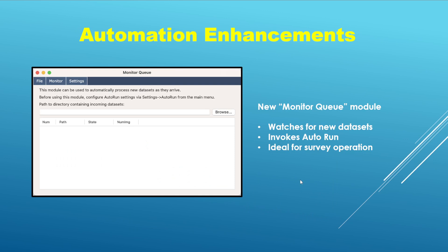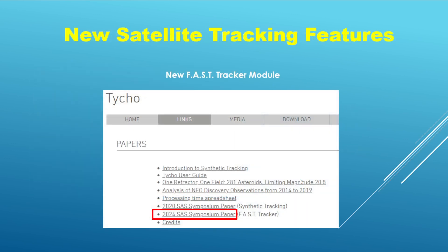A lot of new functionality in version 12 concerns the ability to detect and measure artificial satellites, to include identification and orbit determination. I even wrote an entirely new module to detect moving objects just for this purpose, which I call FAST — an acronym for Fast Acquisition of Streak Targets. The objects themselves do not actually have to be streaked, although it helps a little. I wrote a paper on this, which is available on the Tyco website — this 2024 paper here, if you are interested in learning more about it.